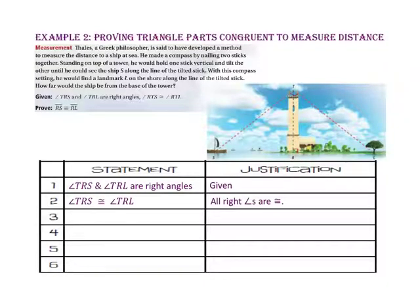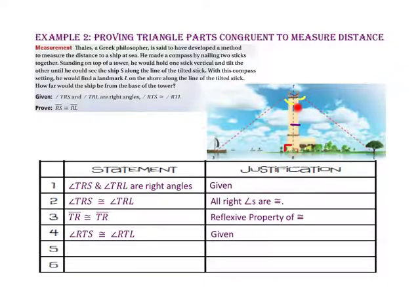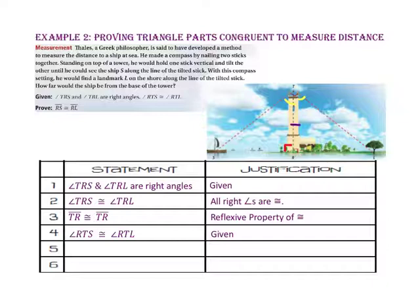Now, let's use the reflexive property of congruence to state that side TR is congruent to side TR. Let's use our other given piece of information that states angle RTS is congruent to angle RTL. Since we have angle-side-angle of one triangle congruent to an angle, side, and angle of another, we know that triangle TRS is congruent to triangle TRL by the angle-side-angle postulate.